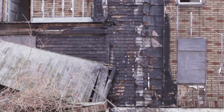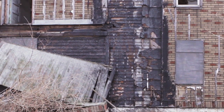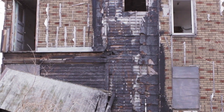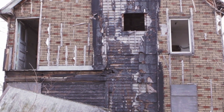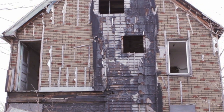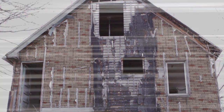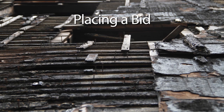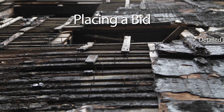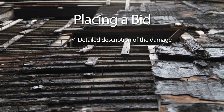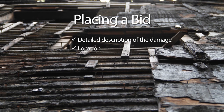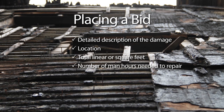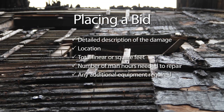When you come across fire damage at a property, you should identify and address it based on the client's requirements. Don't forget to check the attics and crawl spaces, as this may require pulling back insulation to view the framework of the house. Check if the structural integrity has been compromised as well. Include a detailed description of the damage, the location, total linear or square feet, number of man hours needed to complete the repair, and any additional equipment required.